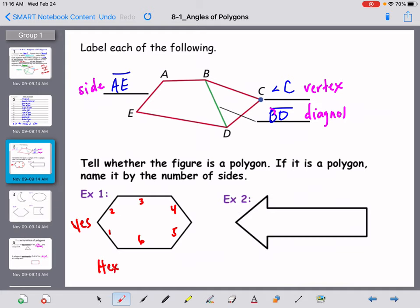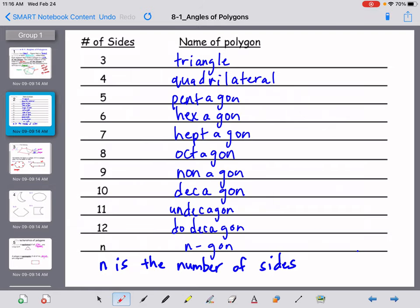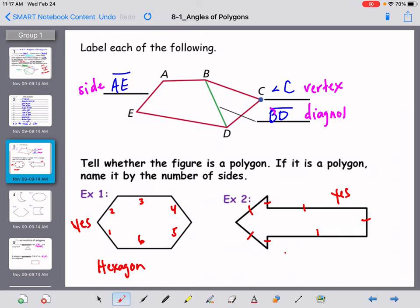So this is a hexagon. Number two: yes, this is a polygon, everything is closed. How many sides do I have? One, two, three, four, five, six, seven. I have seven sides. If I go back and look, a seven-sided figure is a heptagon.